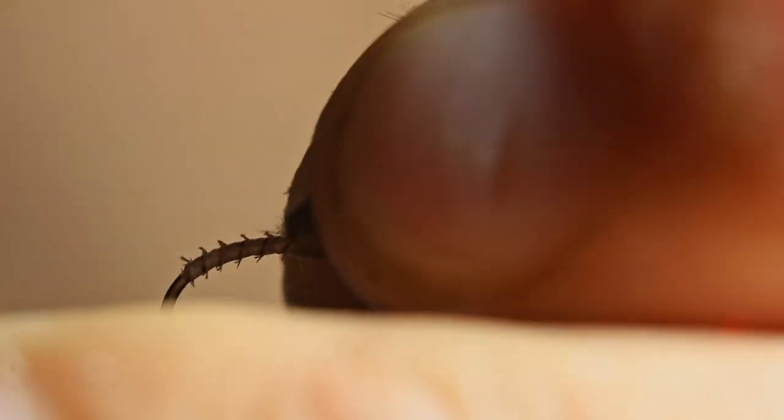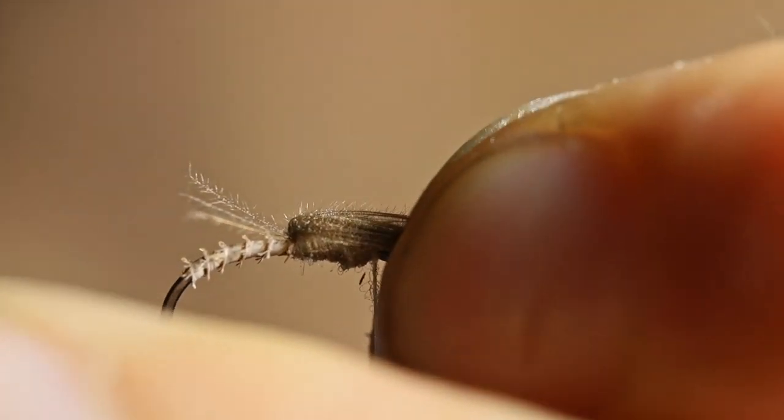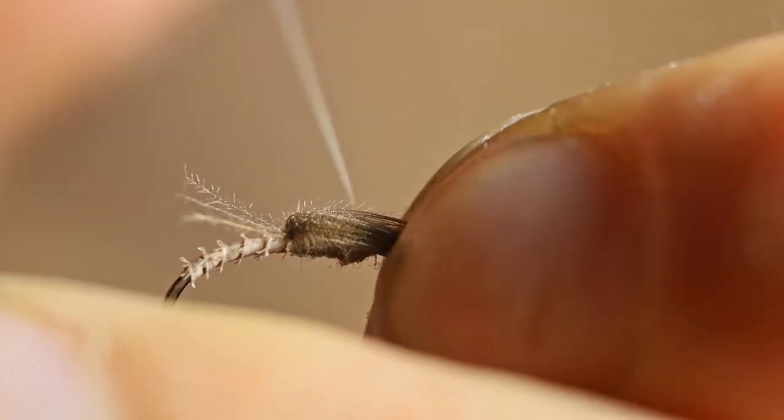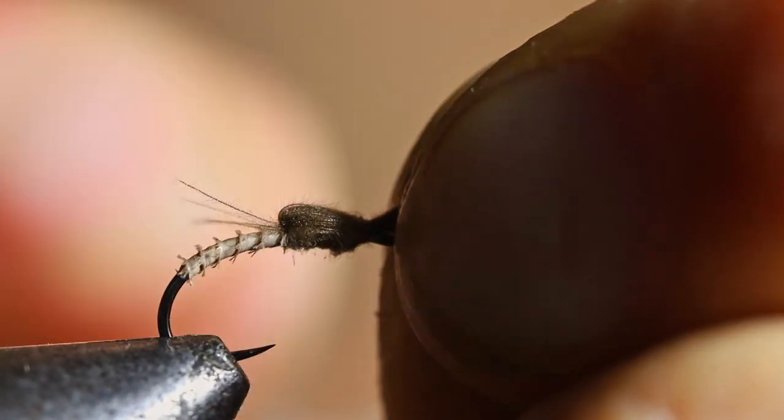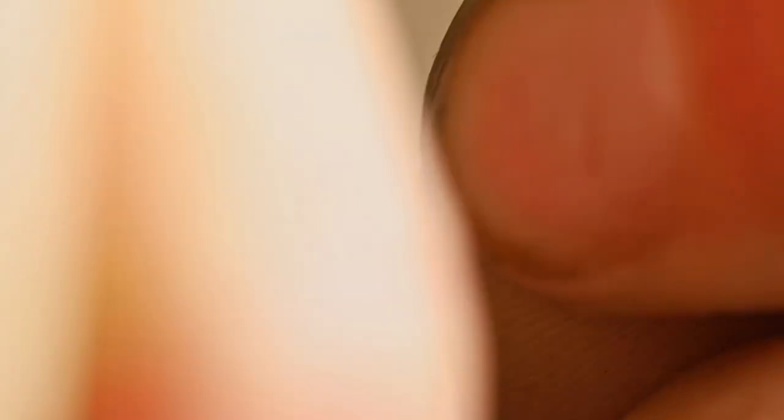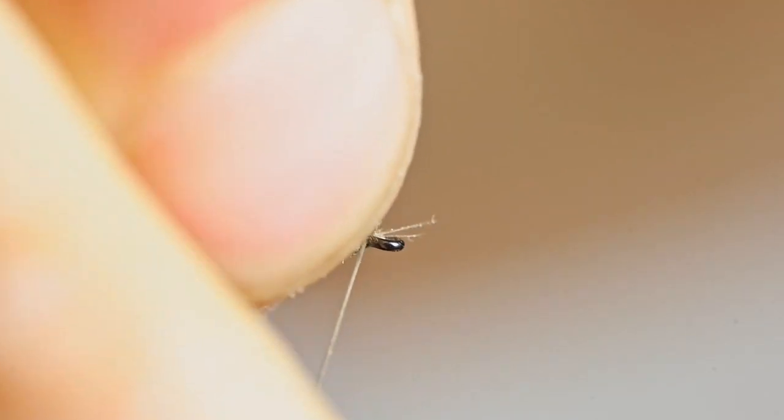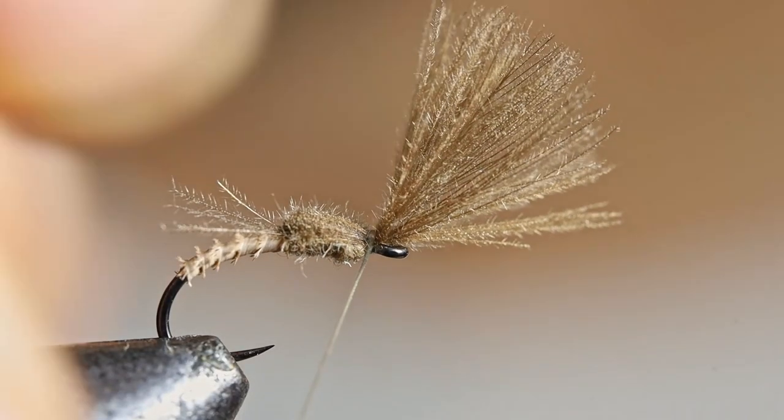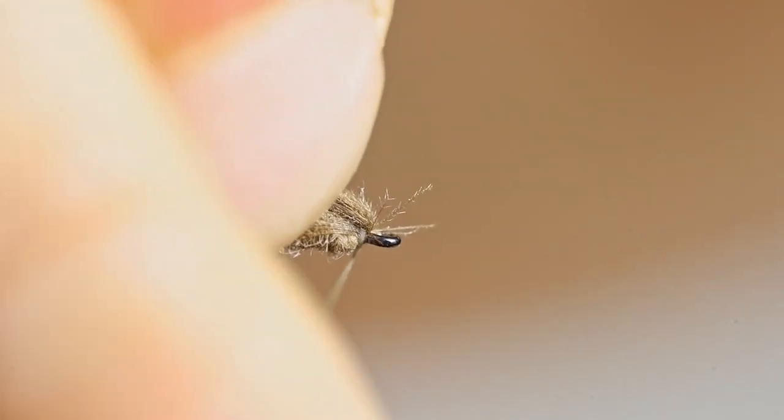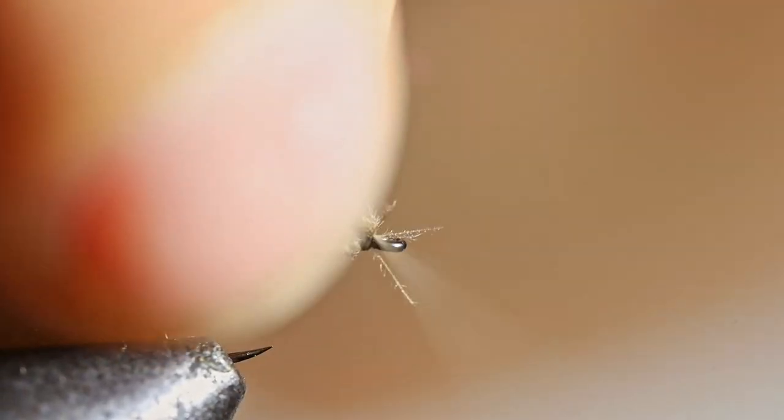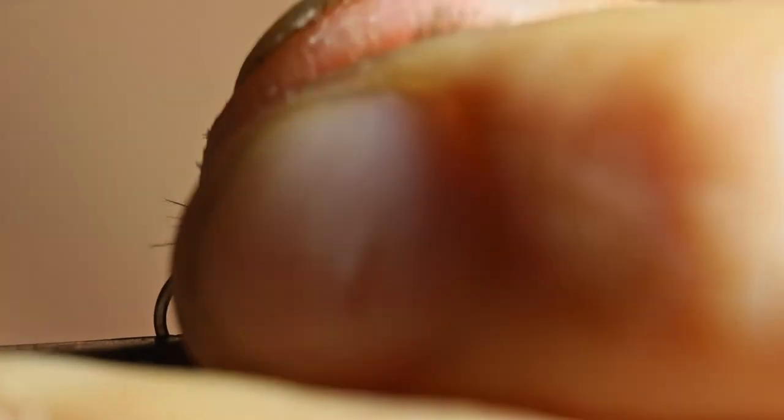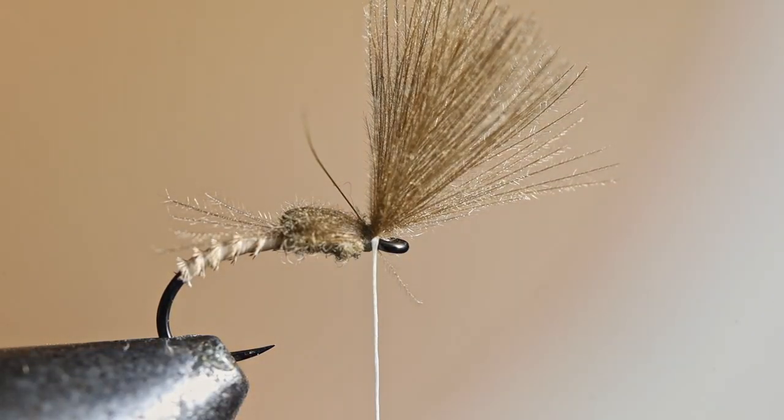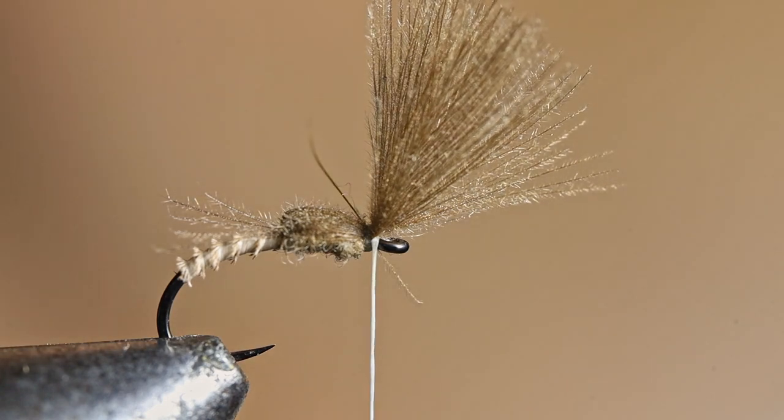Just behind the eye. Take your CDC. Fold it over. And hold it here while you do one wrap. Keep your thread nice and tight. Two wraps. Pull it back. One. Two. Three. And that will help to keep it up and slightly away from the hook eye.